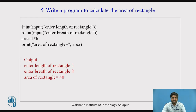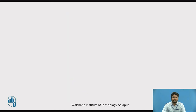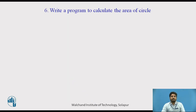Enter the length of rectangle — suppose the user enters 5 and the breadth is 8. The area would be L × B, that is 8 × 5 = 40. Next, write a program to calculate the area of circle. For calculating the area of a circle, you need the formula pi r squared.